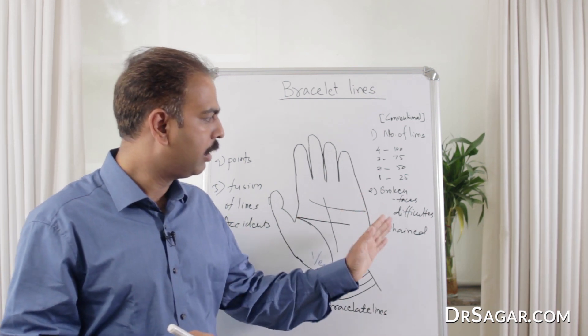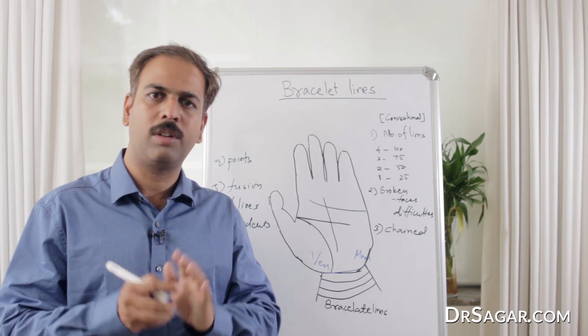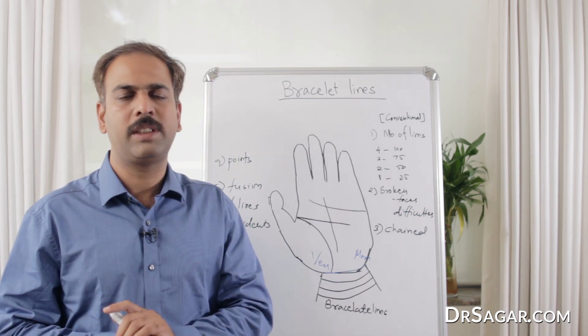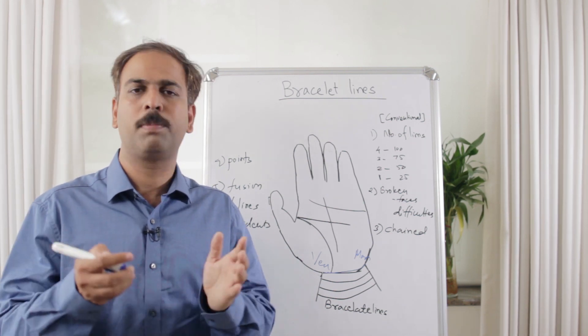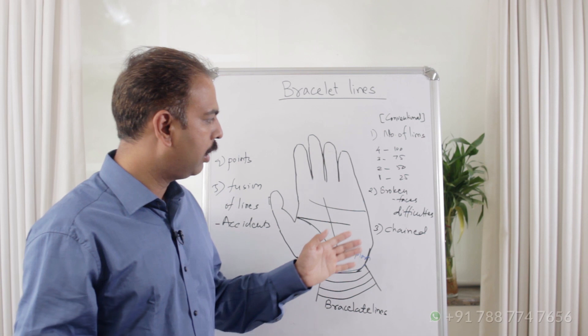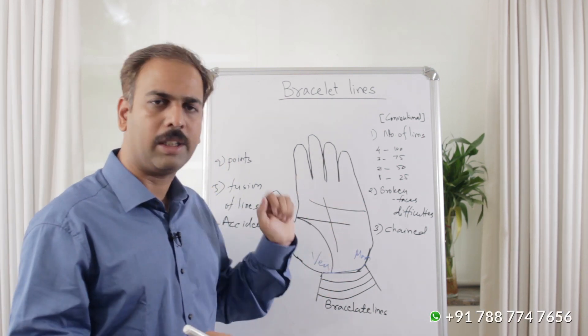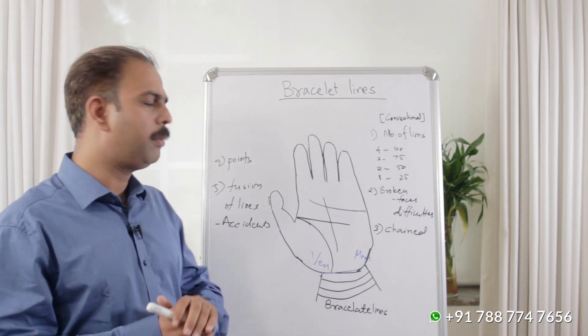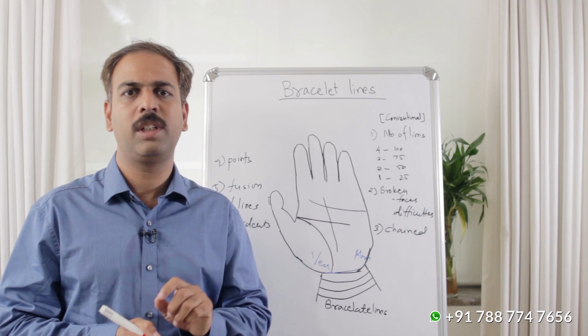This is the first. The second meaning is if the line is broken or chained, the person faces a lot of difficulties in his career or personal life. This interpretation should also be confirmed from other lines.